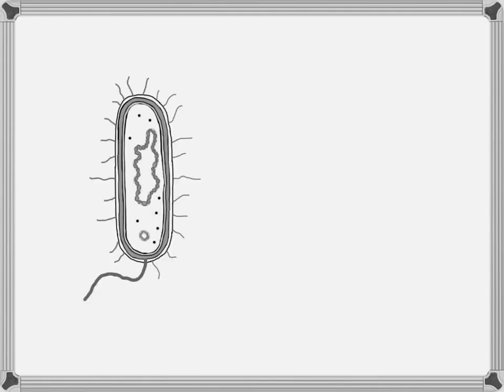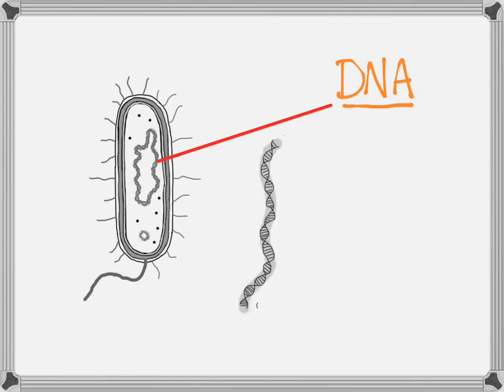Let's talk a little more about what gets copied or replicated before a cell divides. DNA is actually a really long molecule, and it looks like a ladder that somebody twisted.